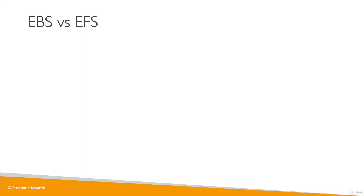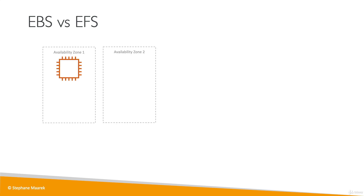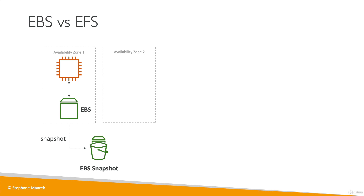Now let's outline the exact differences between EBS and EFS. With EBS, the volume can only be attached to one instance in one specific AZ, and EBS volumes are bound to a specific availability zone. If you wanted to move an EBS volume from one AZ to another, you could create a snapshot and then restore that snapshot into a new availability zone. But this is a copy, not an in-sync replica, and that restored drive can then be used by another EC2 instance.